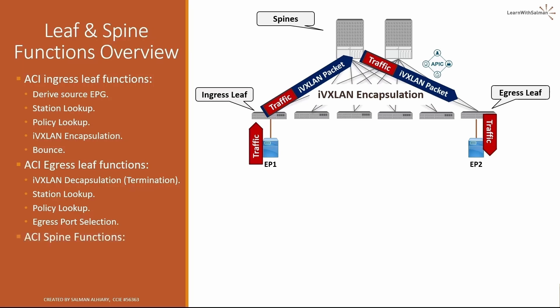ACI spine functions include: forwarding IVXLAN-encapsulated packets between leaf switches, from the ingress leaf to the egress leaf; proxy lookup, which happens when the ingress leaf switch doesn't know where the destination endpoint lives — the spine will perform the proxy lookup and find that information; and multicast root, where spines play the role of the root of the overlay multicast tree when forwarding broadcast traffic in ACI.